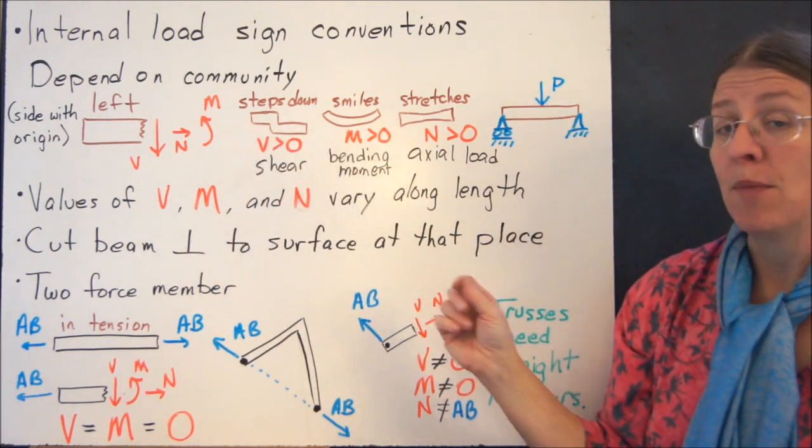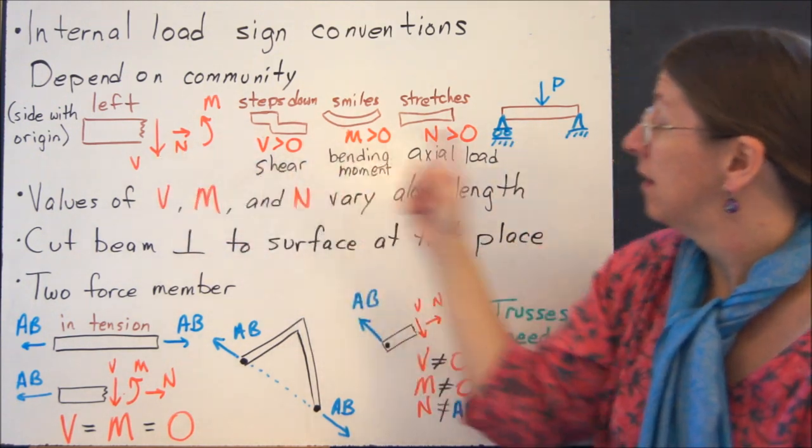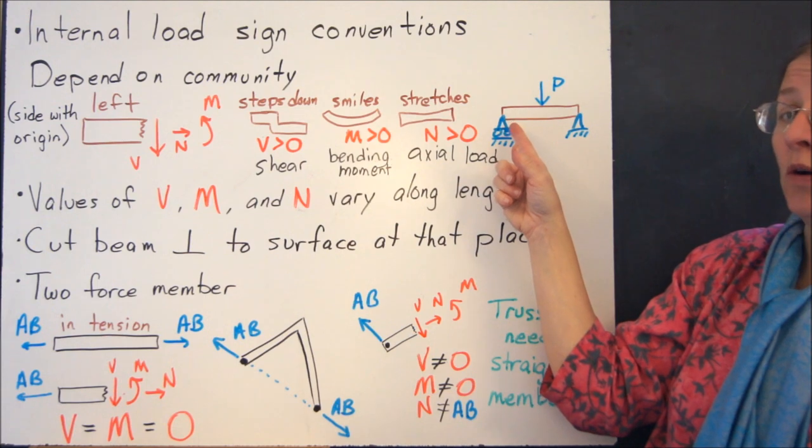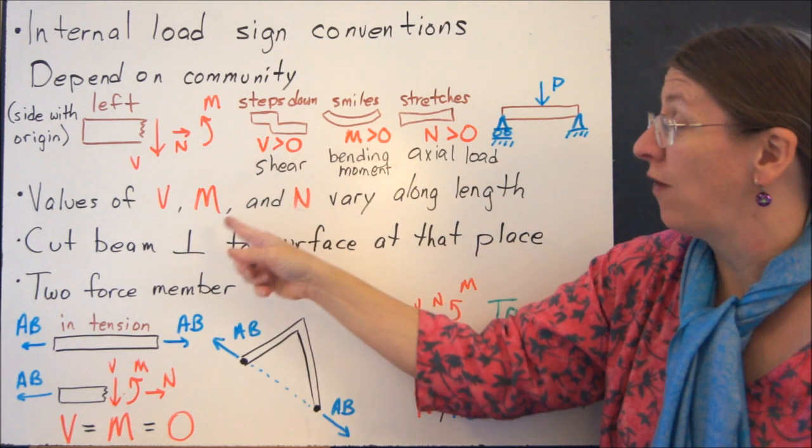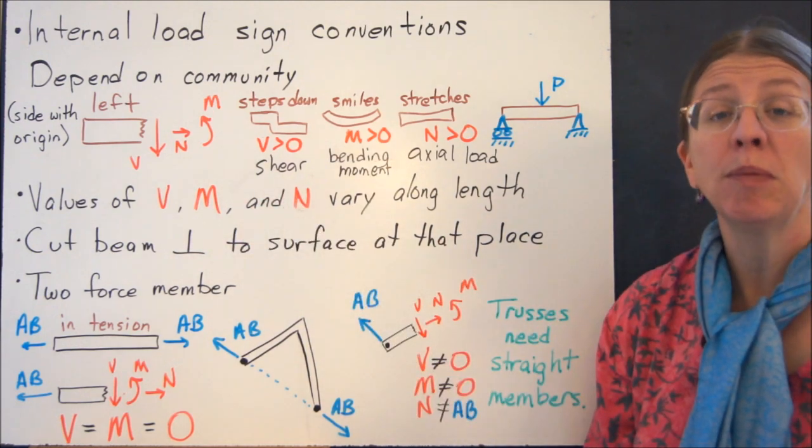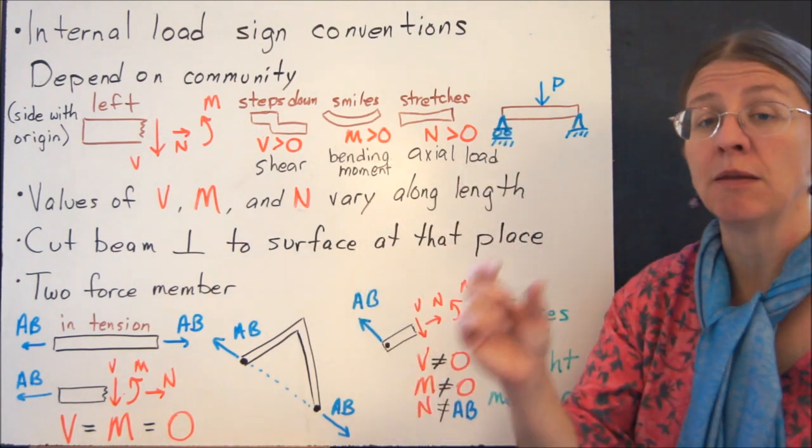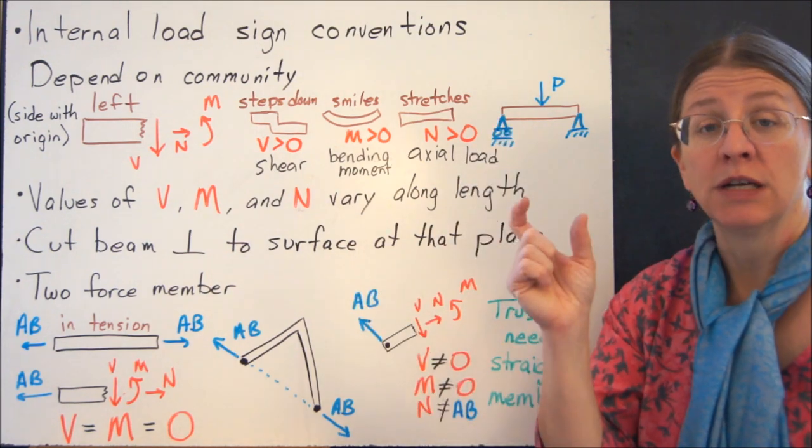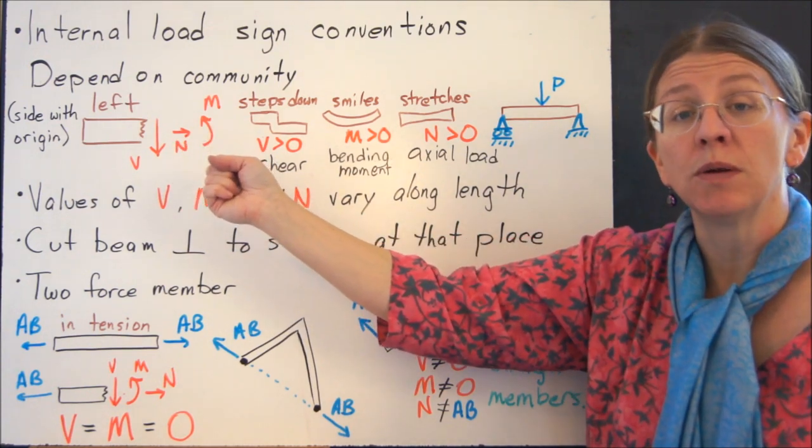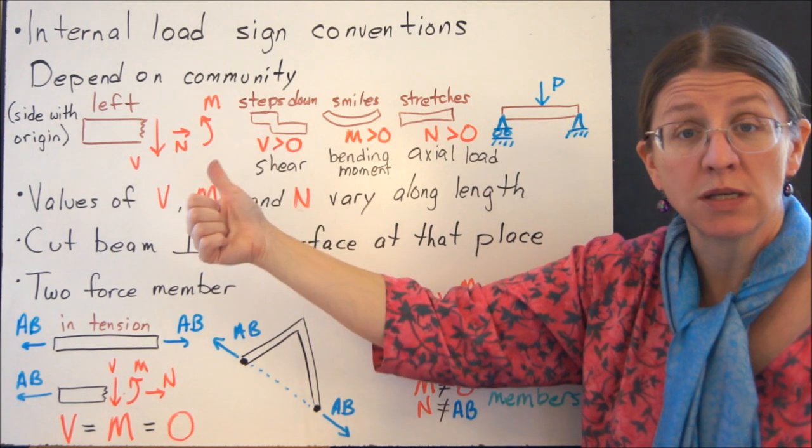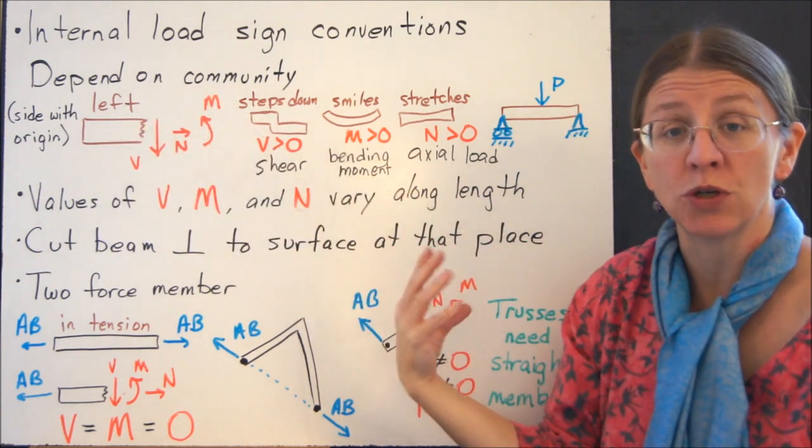The values of V, N, and M are going to change depending on where you look. So if I put V an inch away from the roller, or I put V 10 feet away from the roller, the values of V and M are going to probably be very different. So what are you going to do? You're going to take your beam, you're going to cut it at the point you're looking at, and you're going to put on the internal loads that look like this, and then solve equations of equilibrium to find out what they are. Sum of the forces in X, sum of the forces in Y, sum of the moments on the left-hand or the right-hand portion of the beam.